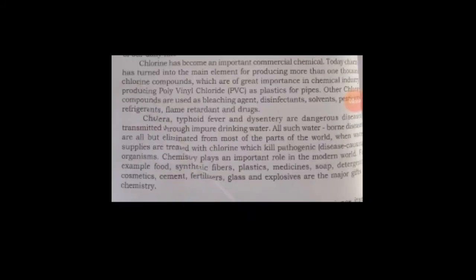Chlorine has become an important commercial chemical. Today, chlorine has turned into the main element for producing more than 1000 chlorine compounds, which are of great importance in the chemical industry, producing polyvinyl chloride, plastic wire, and other chlorine compounds such as bleaching agents, disinfectants, solvents, pesticides, refrigerants, flame retardants, and drugs.